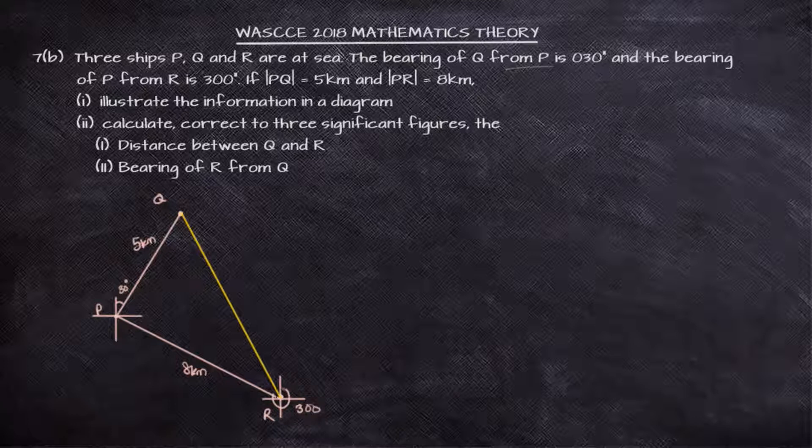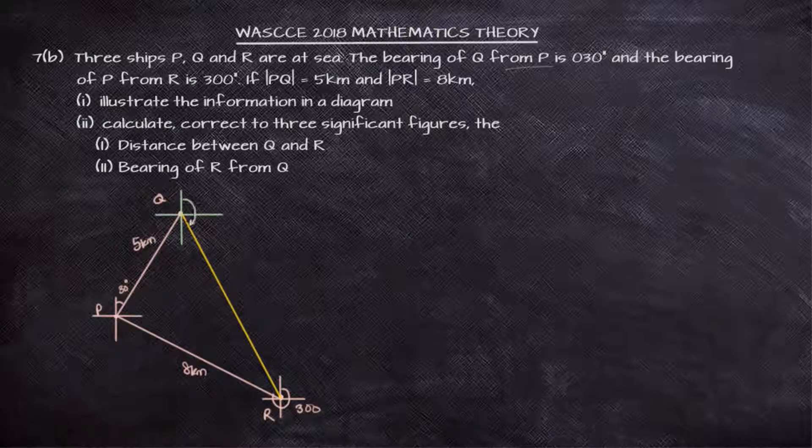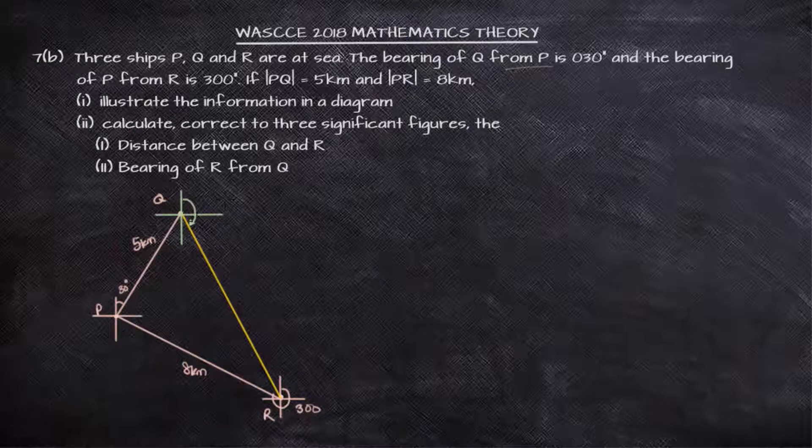From here we can go ahead to find the other questions. If we draw a cardinal point at Q, we're asked to find the bearing of R from Q and the distance between Q and R.